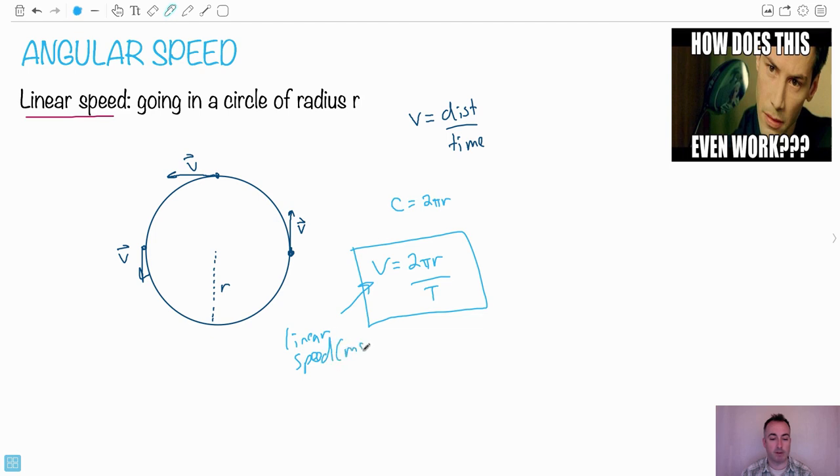This is your linear speed, defined in meters per second. r is your radius of the circle, measured in meters, and t is going to be the period - the time it takes to go all the way around one circle. We'll call that the period t in seconds.